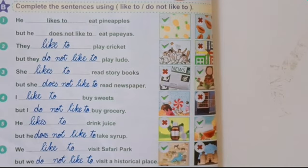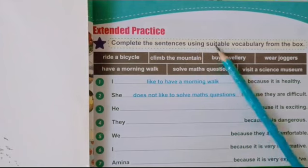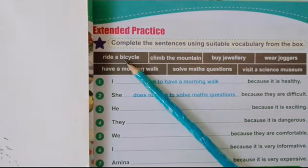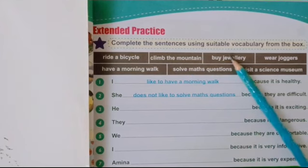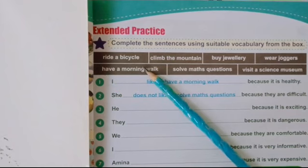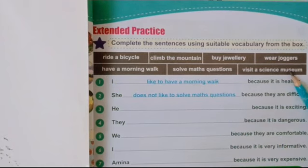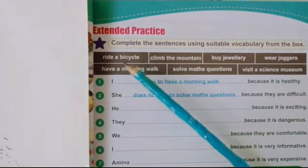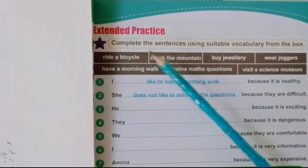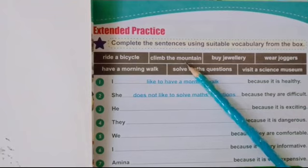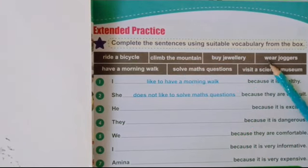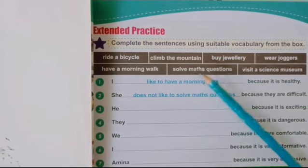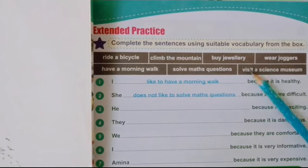Now let's move to extended practice. Complete the sentences using suitable vocabulary from the box. Let's read the vocabulary first — your book should be open in front of you: ride a bicycle, climb the mountain, buy jewelry, wear joggers, have a morning walk, solve math questions, visit a science museum. Let's discuss the meanings: 'climb' means to go up — climb mountains. 'Buy jewelry' and 'wear joggers' are easy. 'Visit a science museum' means to go and visit a science museum.